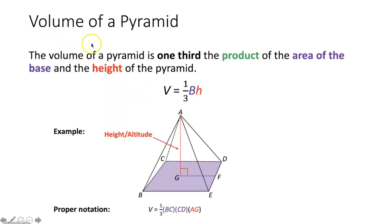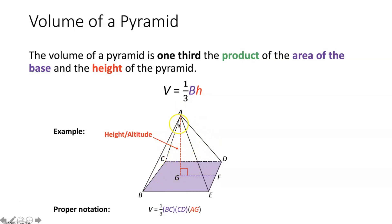First, let's talk about the volume of a pyramid. The volume of a pyramid is one-third of the product of the area of the base and the height of the pyramid, or V equals one-third capital B times H. A pyramid has a polygon as a base and lateral faces that are triangles meeting at a common vertex. To find the volume, take the area of the base, multiply by the perpendicular height from the vertex to the base, then multiply by one-third.